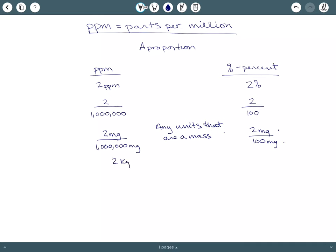You could say two kilograms out of one million kilograms, in the same way that you could say two kilograms out of 100 kilograms. So that's really all that parts per million means.